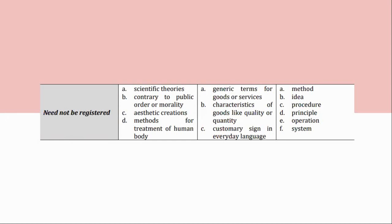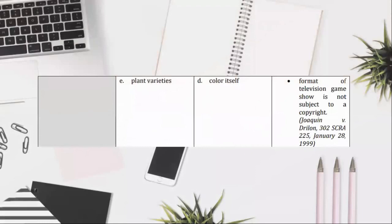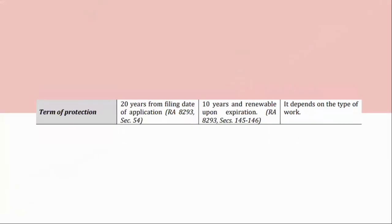Also non-patentable: (E) Plant Varieties. Non-copyrightable: (D) Color Itself. The format of a television game show is not subject to copyright. Joaquin v. Drylan, 302 SCRA 225, January 28, 1999. Term of Protection: Patent — 20 years from filing date of application, RA 8293, Section 54. Trademark — 10 years and renewable upon expiration, RA 8293, Sections 145-146. Copyright — it depends on the type of work.